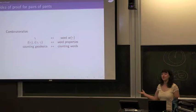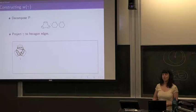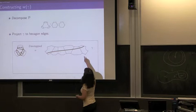Idea of proof: we're going to encode gamma as a word W(gamma) in some finite alphabet, where length and intersection number are properties of this word. So counting geodesics becomes counting words. First, we decompose the pair of pants into two right-angled hexagons. Then we make gamma into a word in the edges of these hexagons. Here's gamma of some sort — we unwrap it, so it's like the universal cover, and this point is the same as that point.